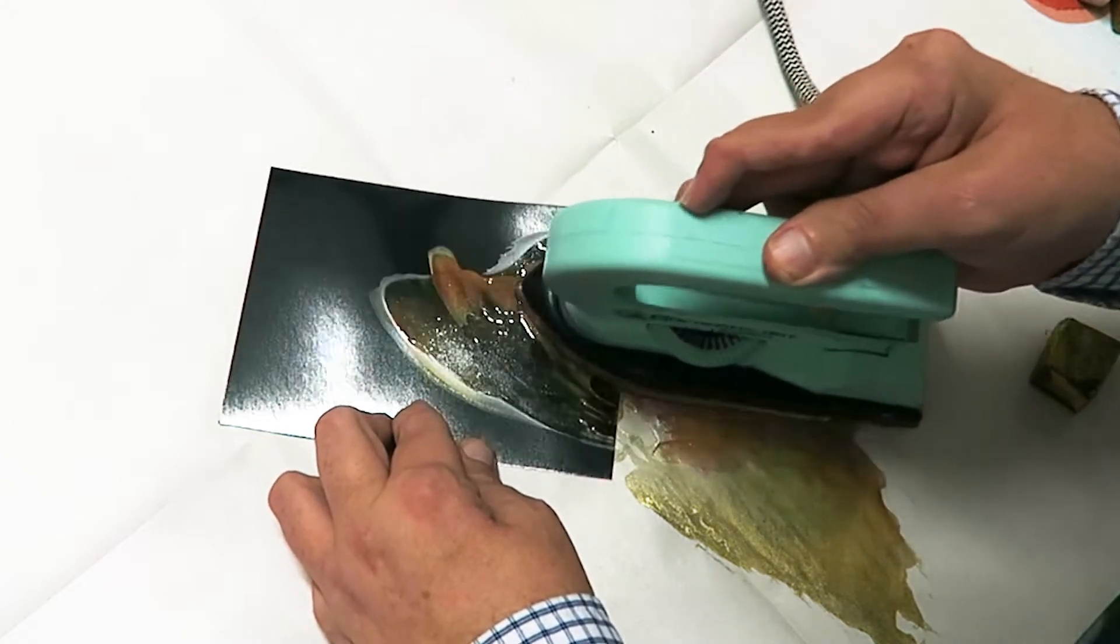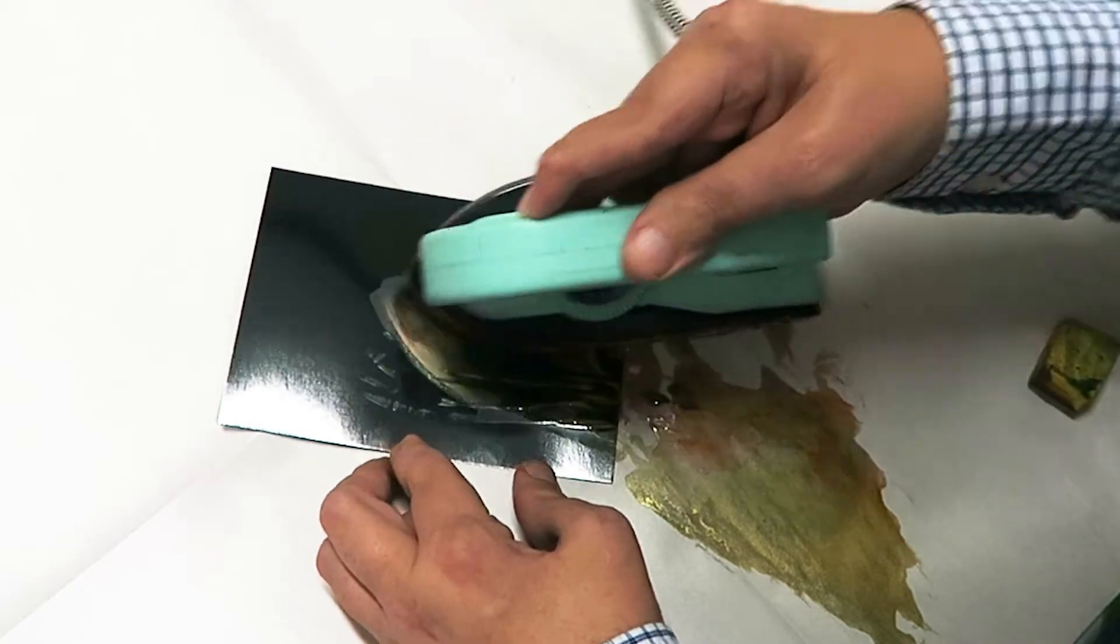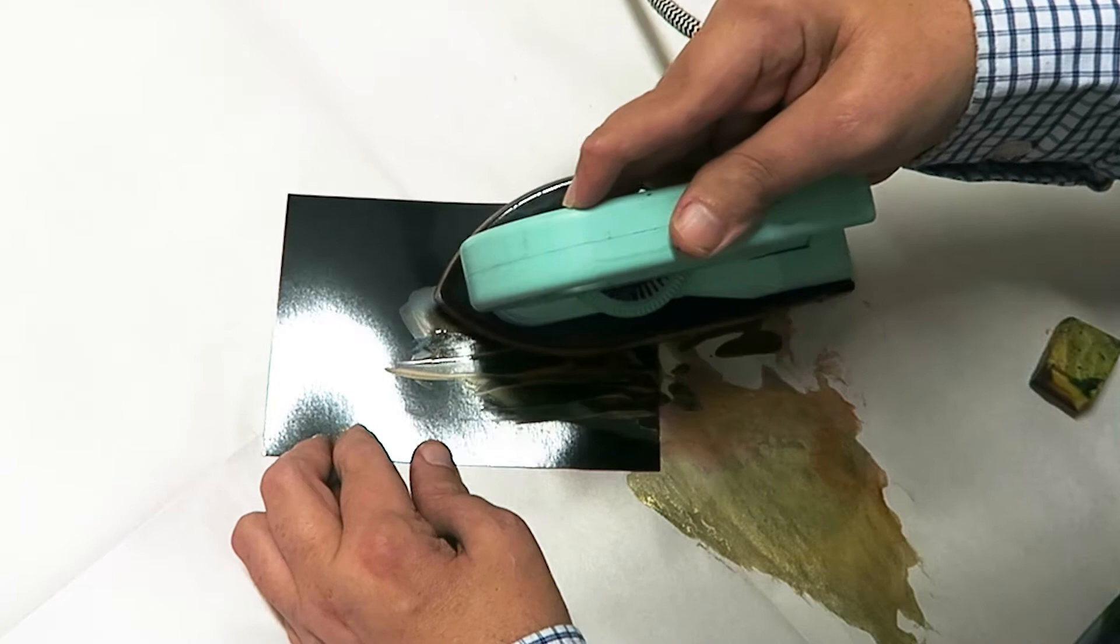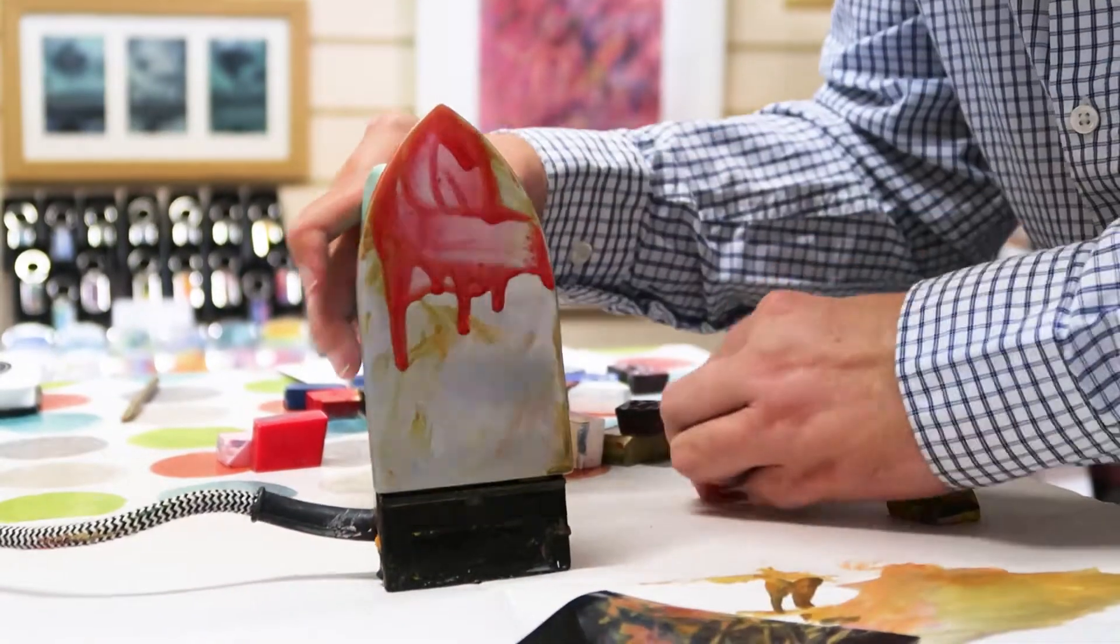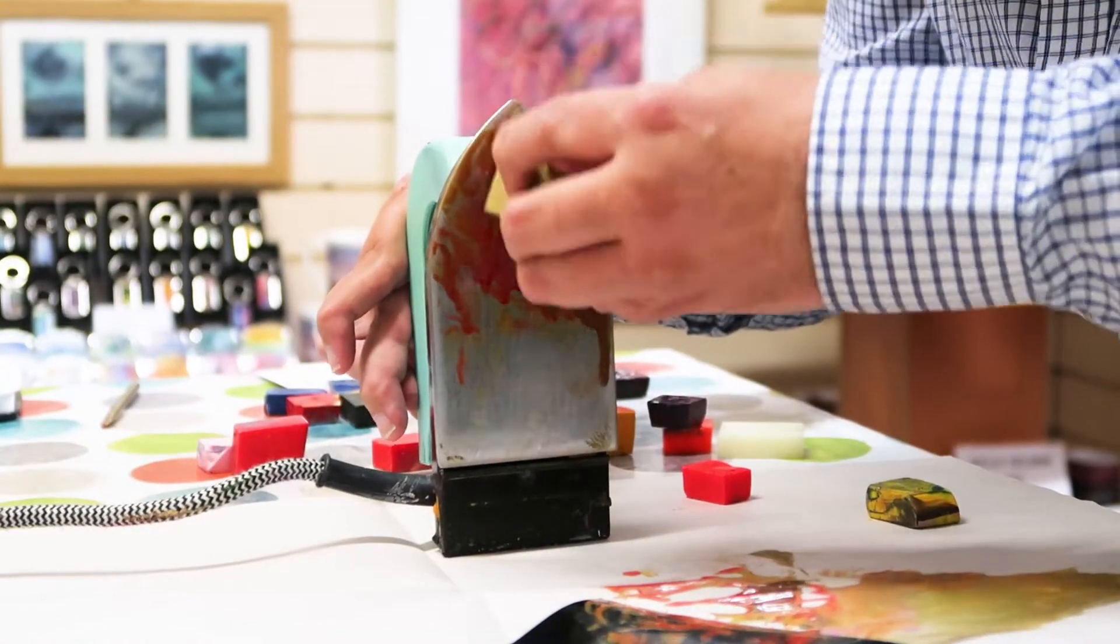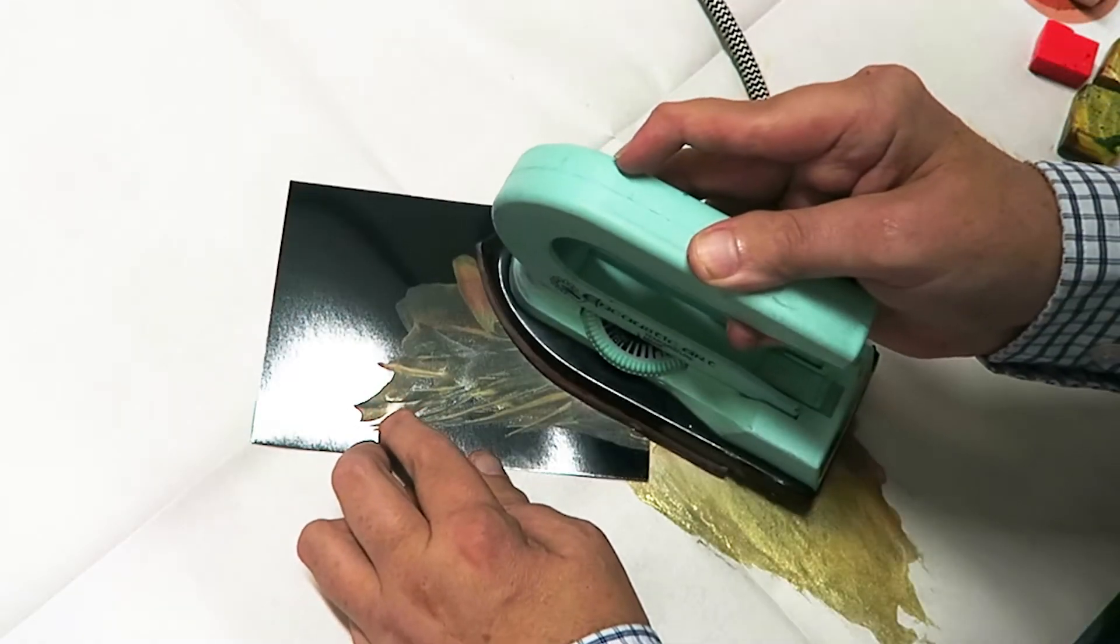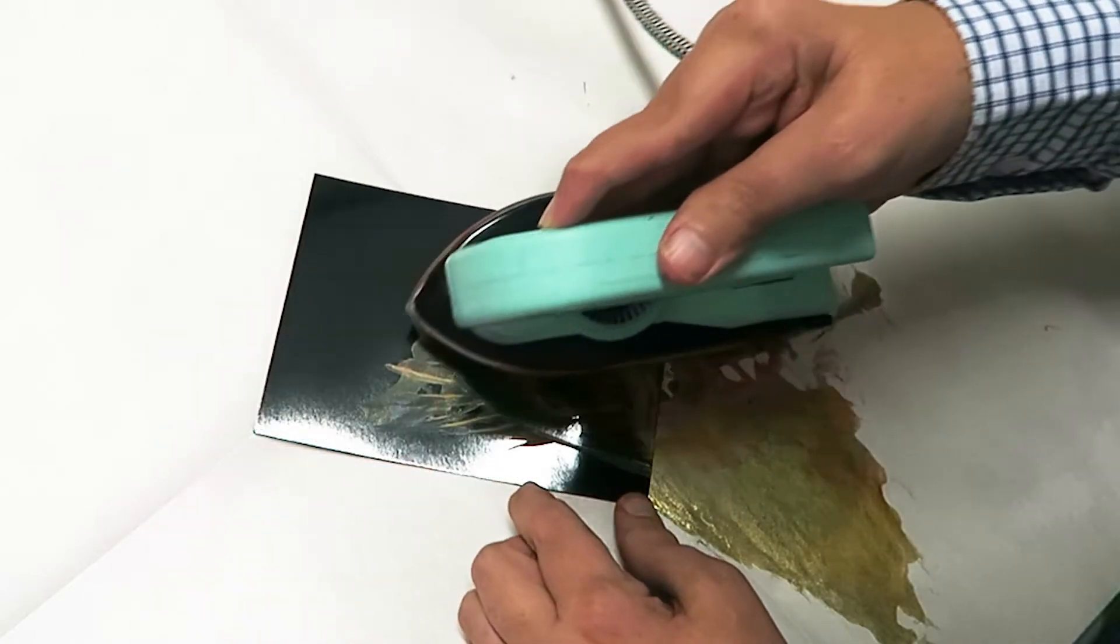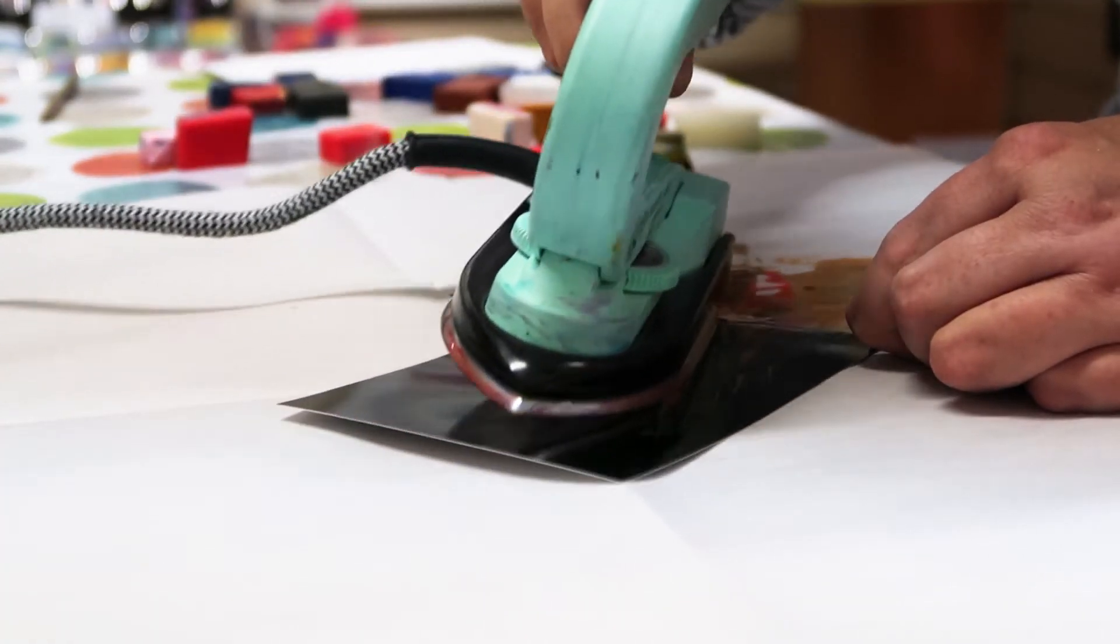Then we start building and pushing the wax around with the sides of the iron. The thing with the bonfire on black card is to build it up in layers. I've got some reddish pink color down there. Plenty of gold, and then just start using the sides of the iron to push the wax around.